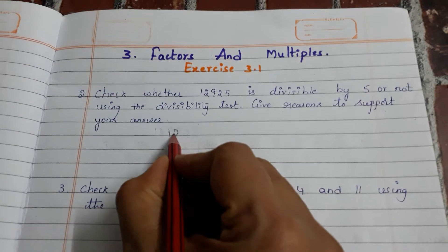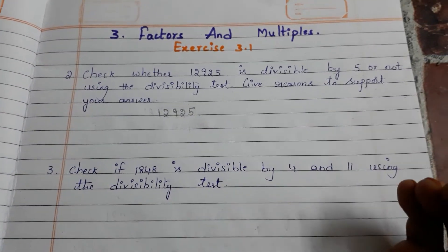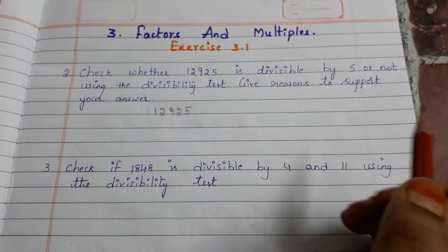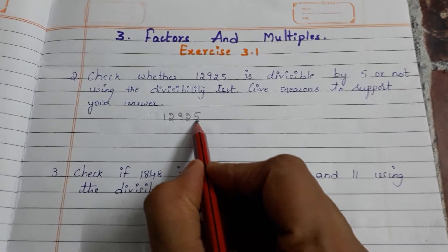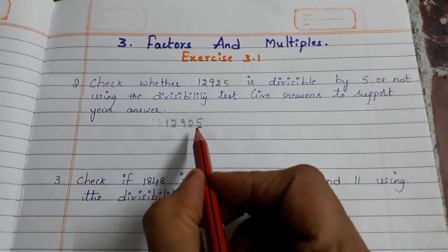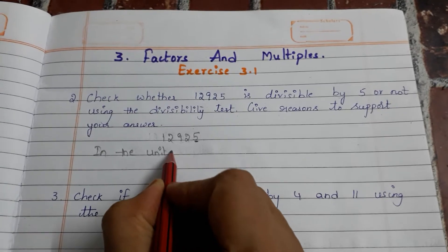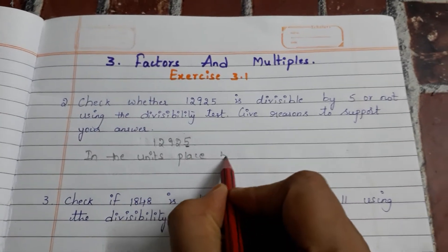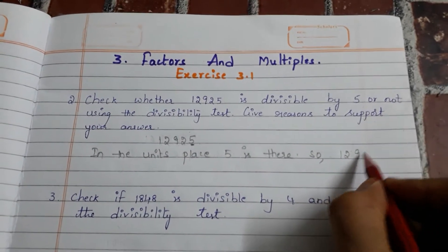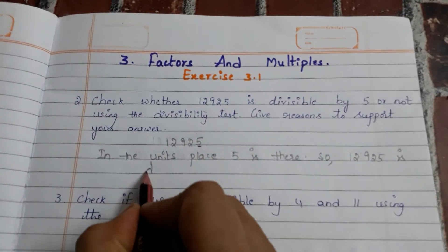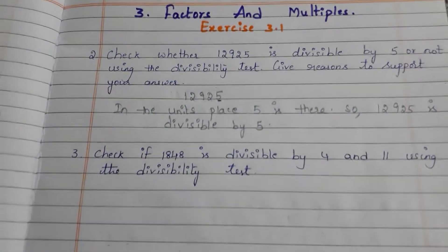First, take the number 12925. We have to check whether this number is divisible by 5 or not. Recollect the divisibility rule for 5: in the units place, 0 or 5 should be there. Check what is in the units place. Here 5 is there, so this number is divisible by 5. Write: in the units place 5 is there, so 12925 is divisible by 5.